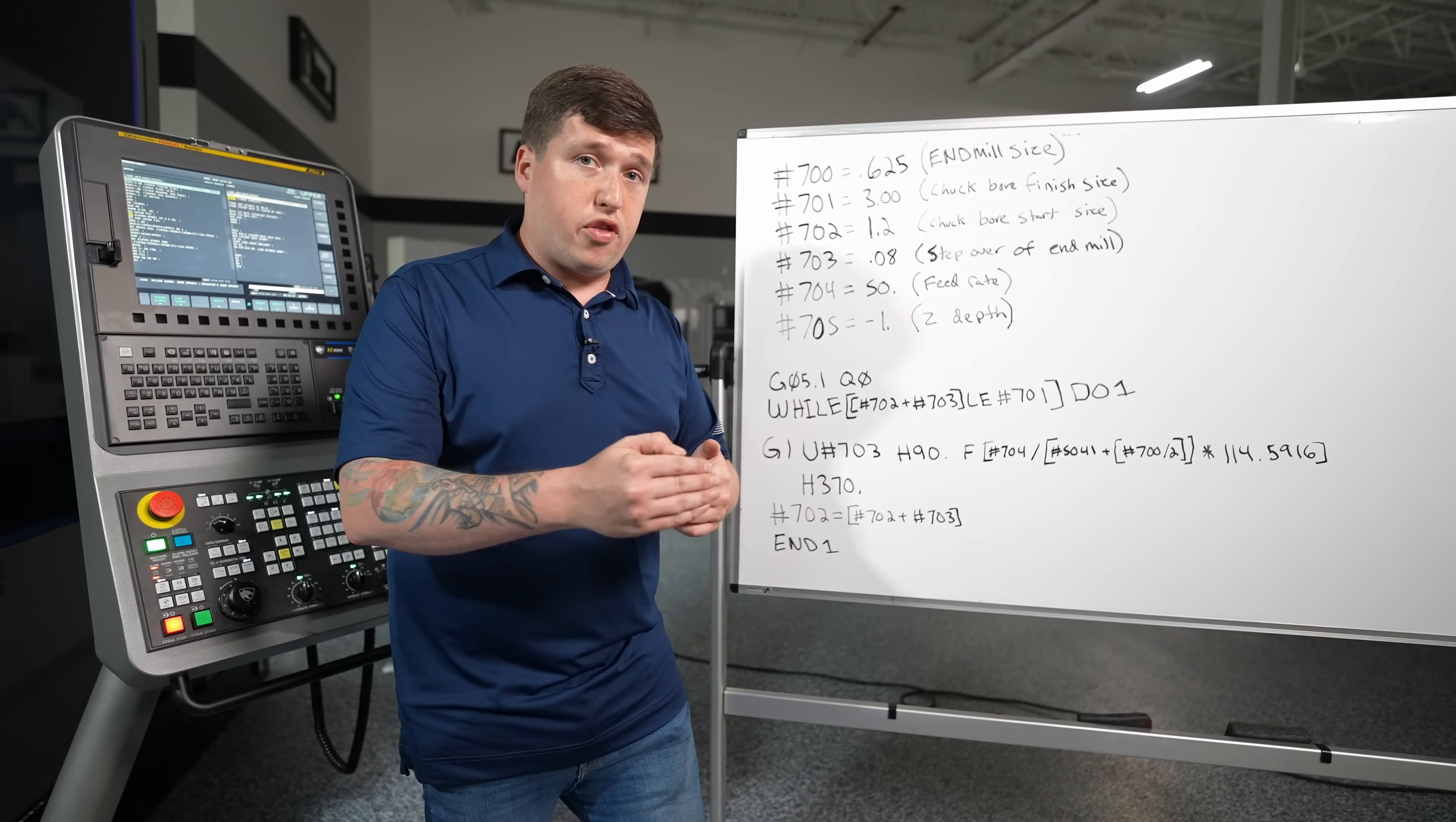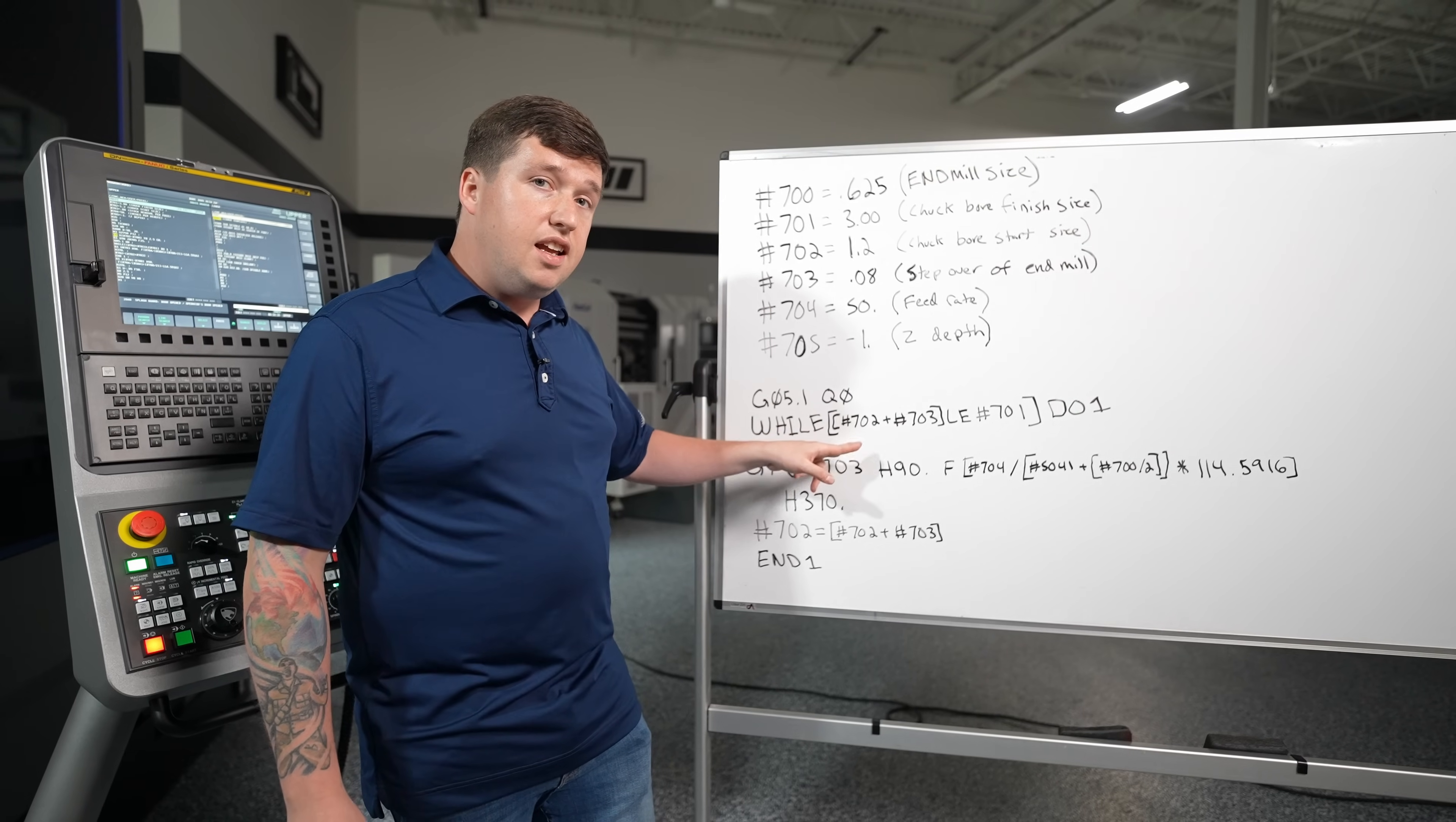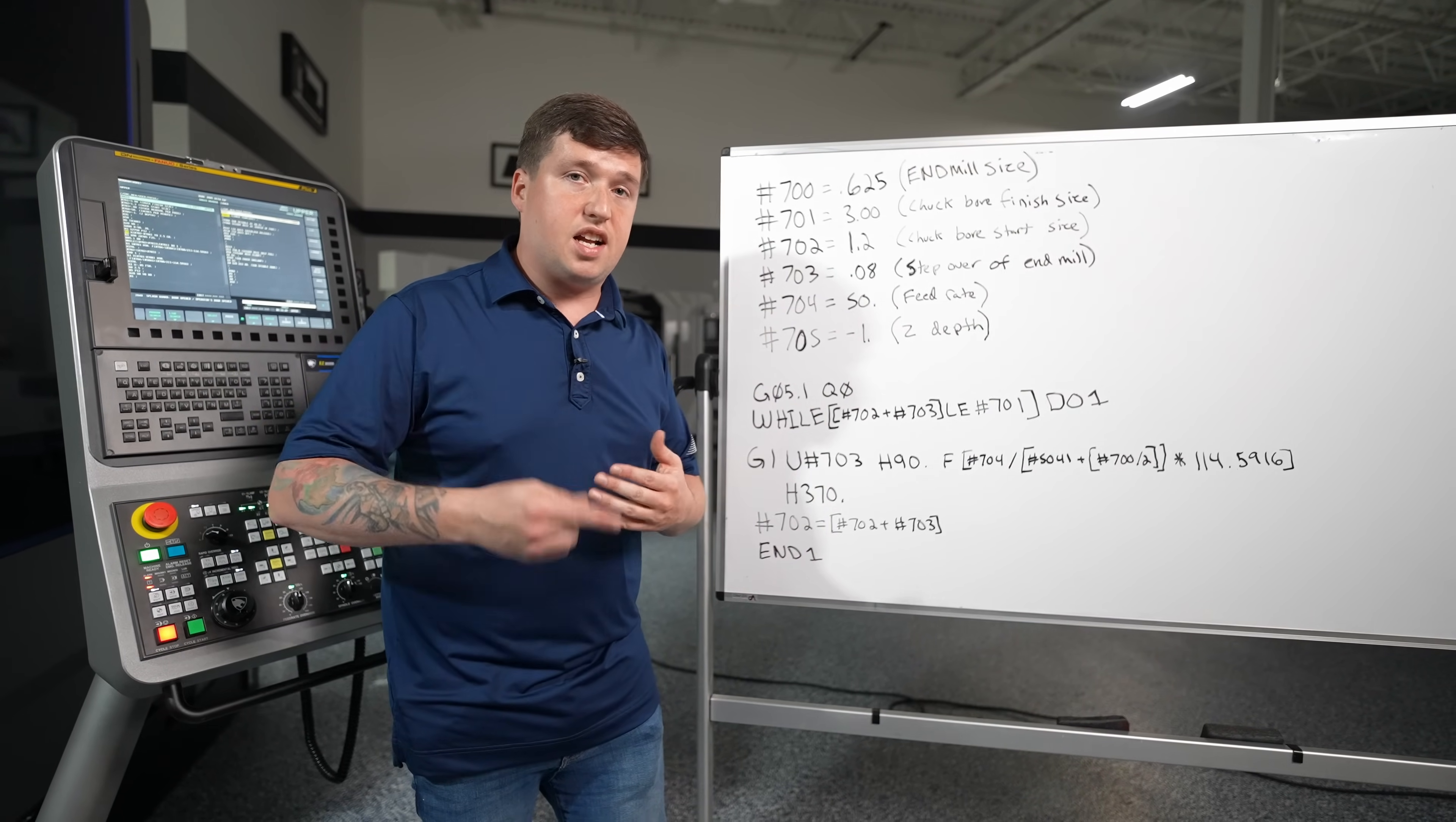Now what I wanted to do is is I wanted it to do a pass and then say okay if I go one step further am I going to exceed pound 701? Am I going to go above three inches? So it doesn't matter what you put in here whatever your step over it is. It is going to look at where you're at and then it's going to say if I add one more step over to it am I going to exceed the max diameter? If those conditions are then met it's going to stop doing this loop and it's going to take its finished pass.